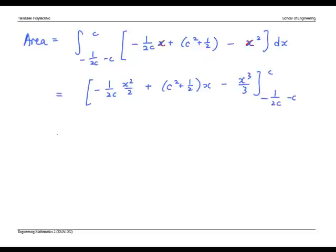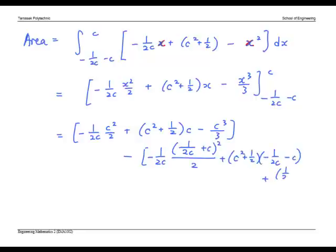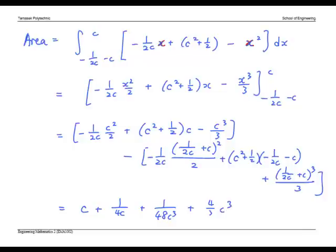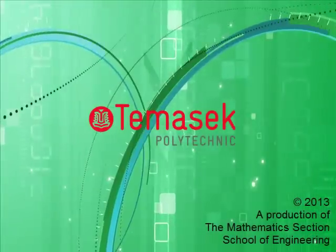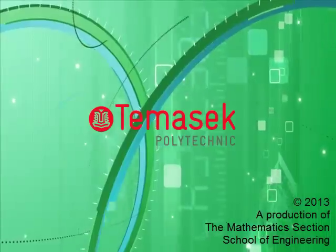Substituting, we get, which simplifies to c plus 1 over 4c plus 1 over 48c squared plus 4 over 3c cubed unit squared as the area in terms of c.